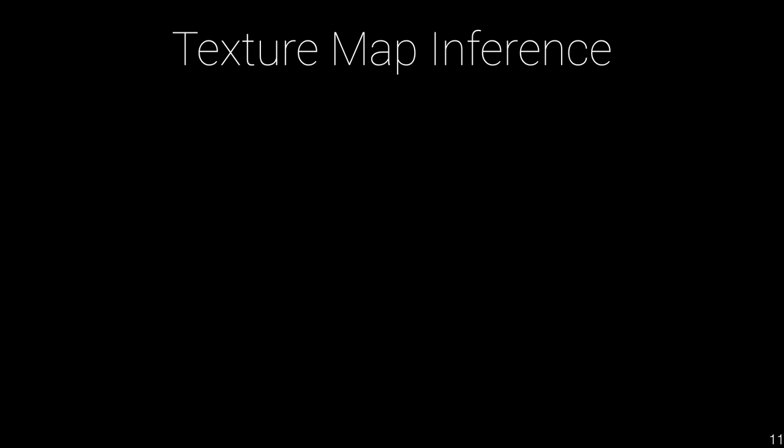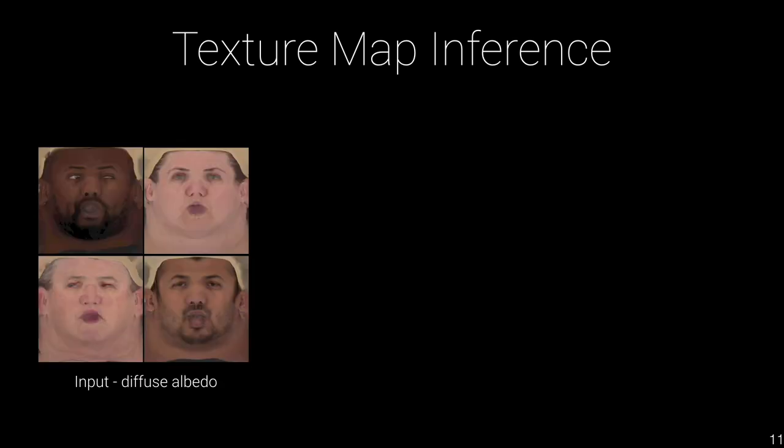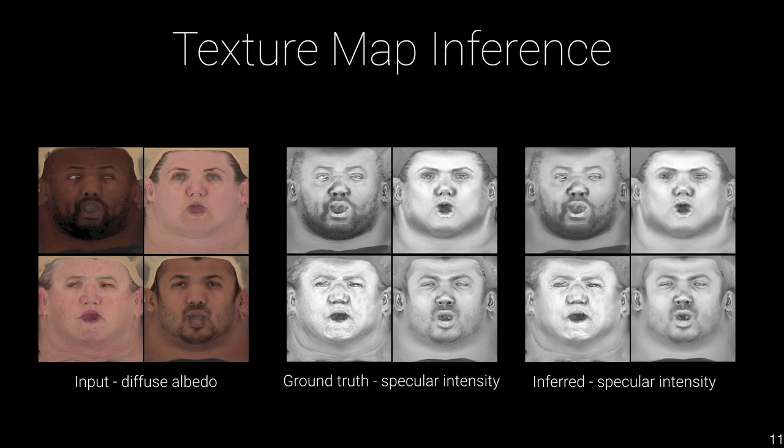Here are the results of specular map inference of our network. The visual quality of our inferred specular is comparable to the ground truth. Specular is the reflectance property of the human face, which can only be obtained by specialized devices. However, our results demonstrate that if we input a proper albedo, the specular can be accurately inferred.